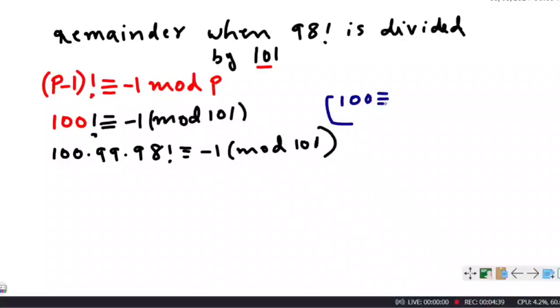100 is congruent to -1 mod 101, and 99 is congruent to -2 mod 101. So we can use this to find the remainder.